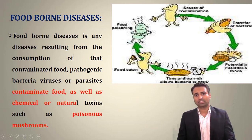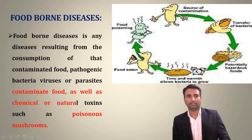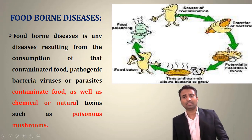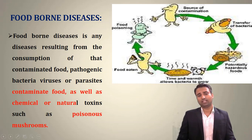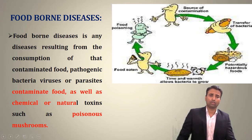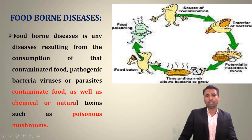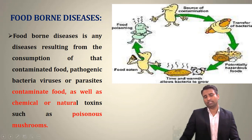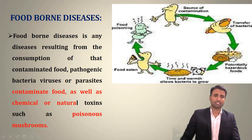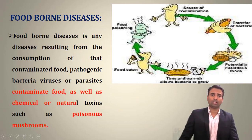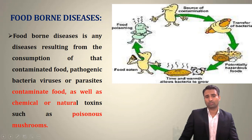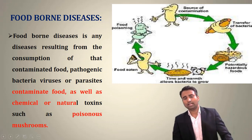Foodborne disease results from the consumption of contaminated food. The contamination can be physical, chemical, or biological. It can involve pathogenic bacteria such as aflatoxin, mycotoxin, and Clostridium botulinum. We will also study parasites and natural toxins that cause poisoning, for example in mushrooms.